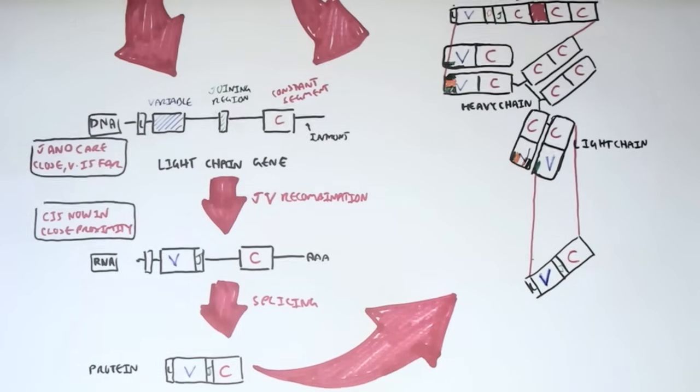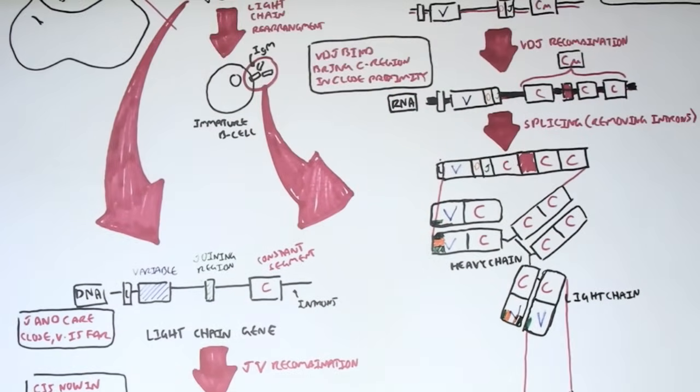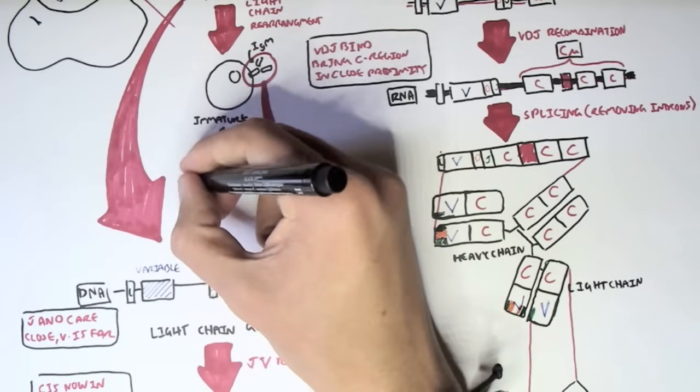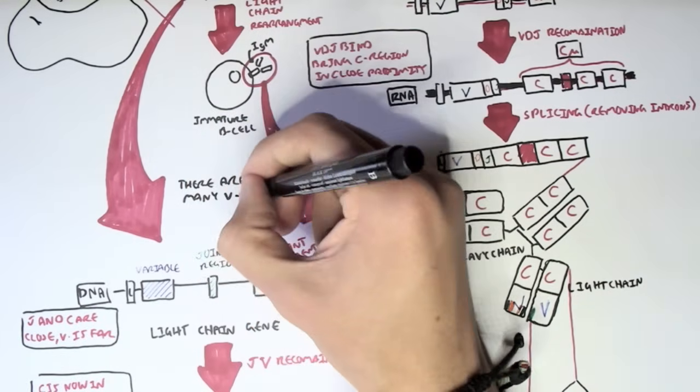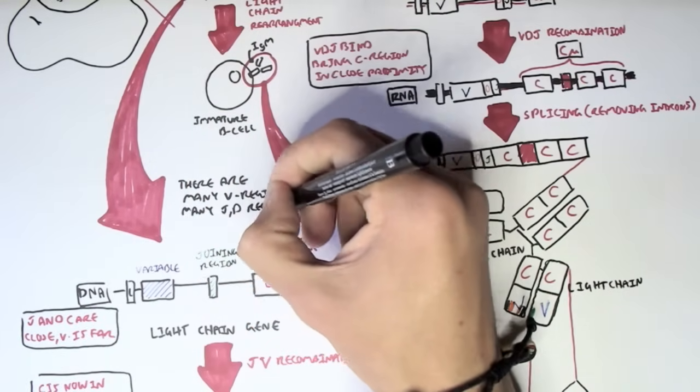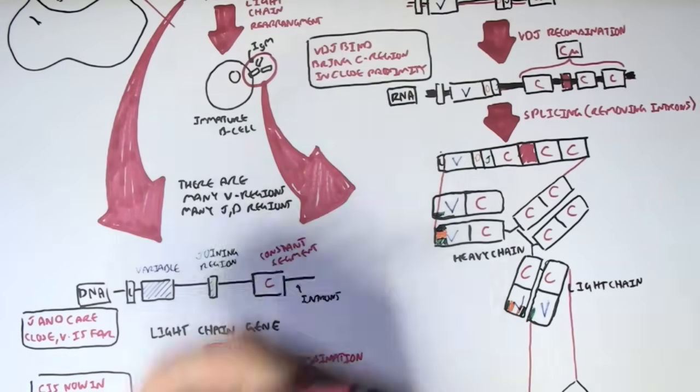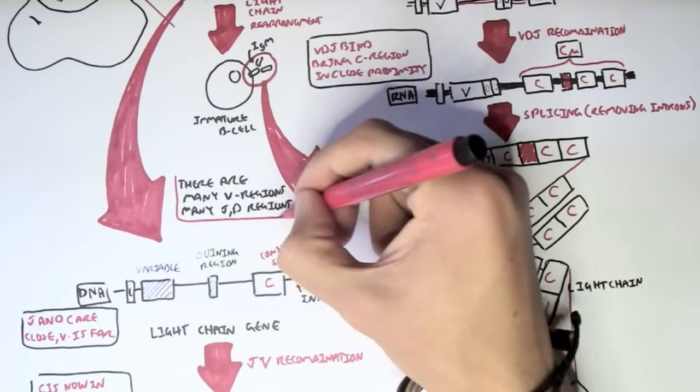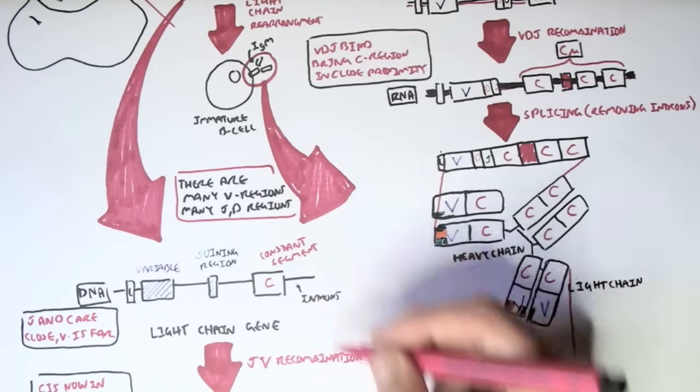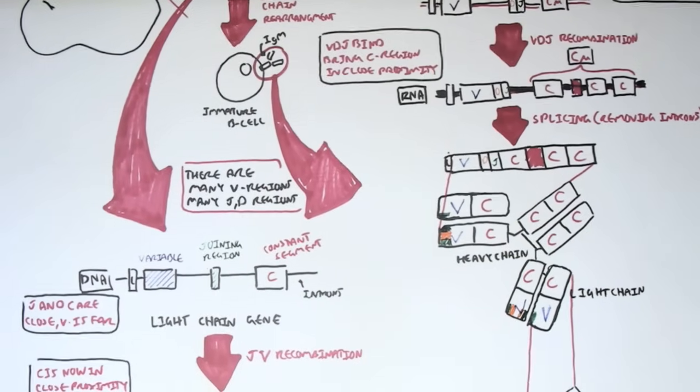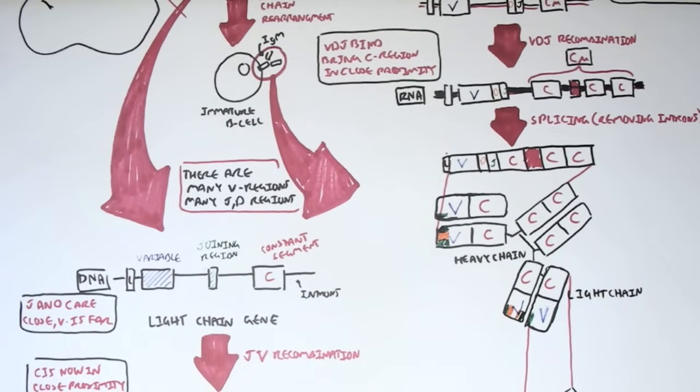Now as I've mentioned, we don't only have one variable region, even in the light chain, one joining region or one constant region. There is actually many V regions, many joining regions, many diversity regions. And so all this mixing up between the V, D and J will make a unique antibody. Not only that, during somatic recombination, new nucleotides can also be added to increase the diversity and specificity of these antibodies.